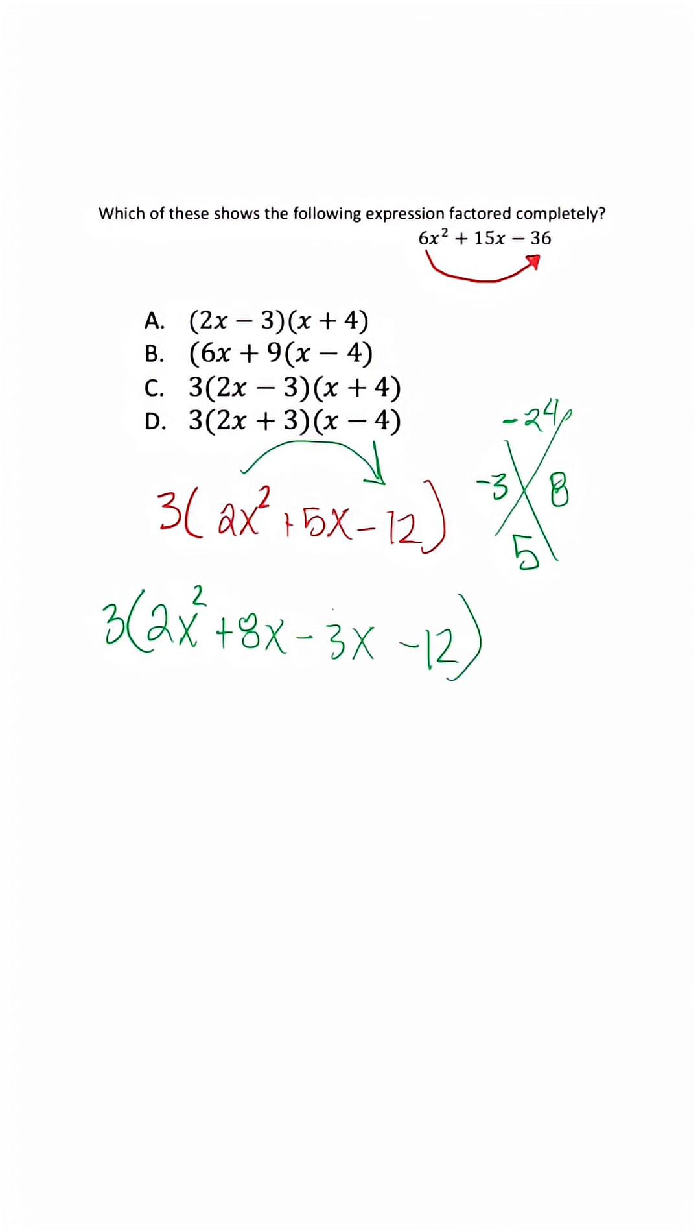I'll pull out a GCF. We pull out 2x here, leaving x + 4. Then in the second set of parentheses, when I pull out 3, I'm left with x + 4 again.